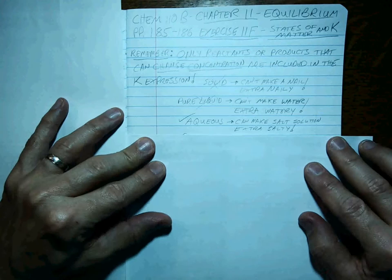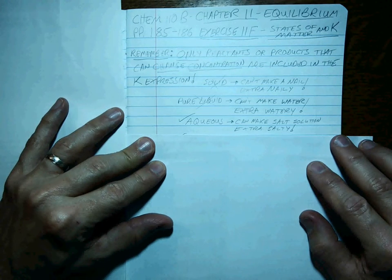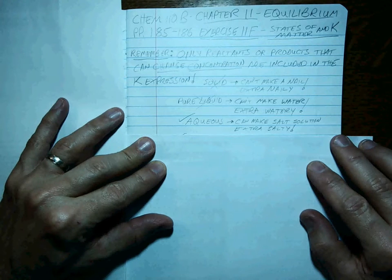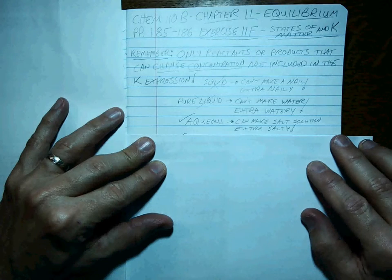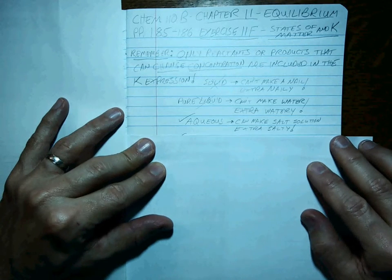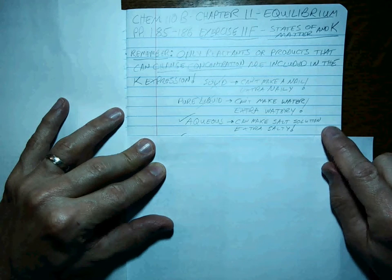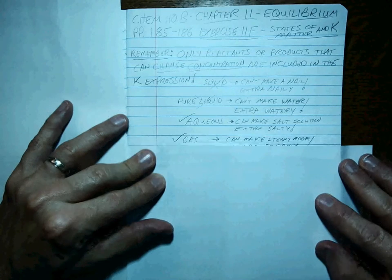But certainly an aqueous solution can become a different concentration. All you have to do is add a little bit of sugar to something or a whole bunch of sugar to something, and you know the concentration of sugar can change. You can make a salt solution very diluted, or you can add more salt, dissolve more salt to make it extra salty. So aqueous solutions can change their concentration.